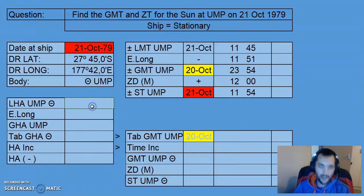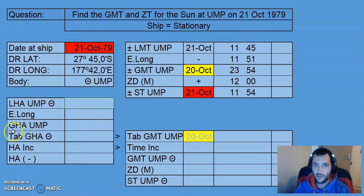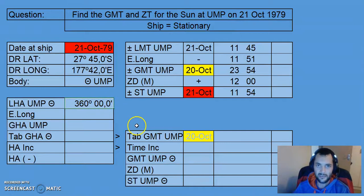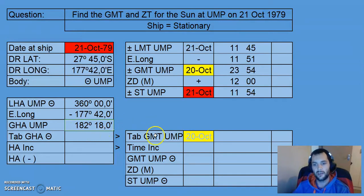At Upper Meridian Passage, the Sun is on the observer's meridian, so the local hour angle must be either 0 or 360. We're going from local towards Greenwich and we are east, so we need to subtract. The best approach is to use 360, then subtract our east longitude, which brings us back to Greenwich and gives us a Greenwich Hour Angle of 182°18.0'.